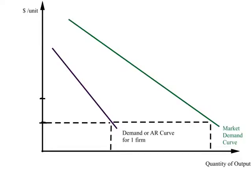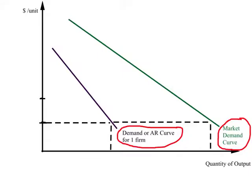A key point is how do we get the AR or demand curve for one firm under monopolistic competition. Consider the case of the toothpaste industry in the US. At any point in time we can figure out the market demand curve for toothpaste in the entire US. Based on the money a firm spends on advertising and packaging, plus the quality of its product, each firm will carve out a market share, and from that market share you can derive a demand or average revenue curve for each firm.